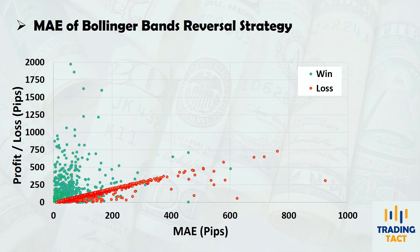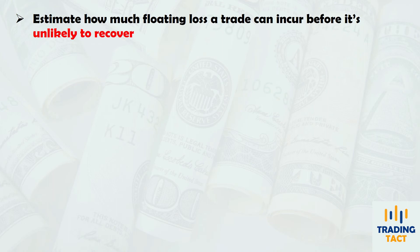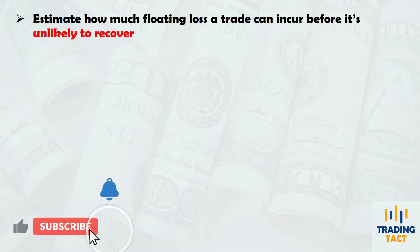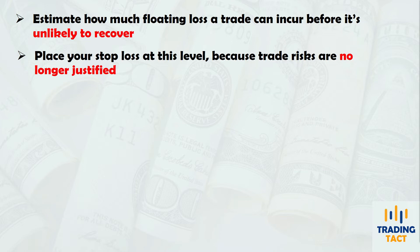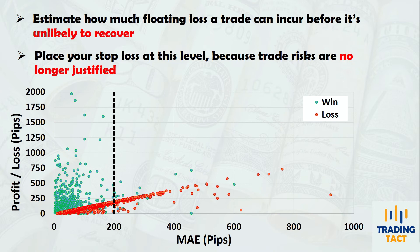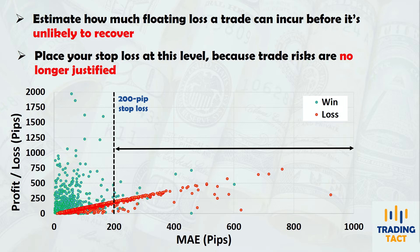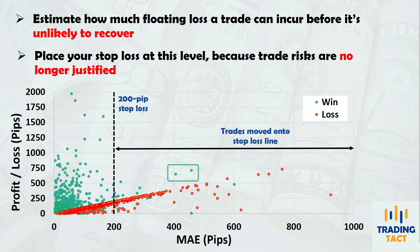Let's now use this chart for stop loss placement. By analyzing the distribution of MAE in relation to the eventual profit or loss, you can estimate how much floating loss a trade can incur before it is unlikely to recover. You can place your stop loss at this MAE level because the risks associated with the trade are no longer justified. Adding a stop creates a vertical boundary at a particular MAE value — once this value is hit, the trade is immediately closed at a loss. All trades to the right of this stop will be shifted onto this line. This seems great because you'll be removing the big losses, but you will also sacrifice a portion of your winning trades. An optimal stop loss thus removes the big losses without choking off too many trades that eventually became profitable.